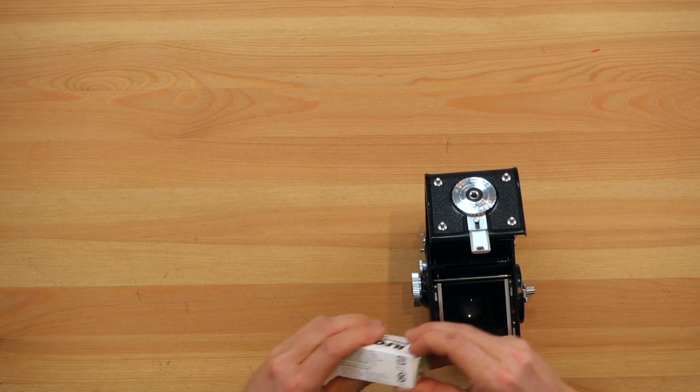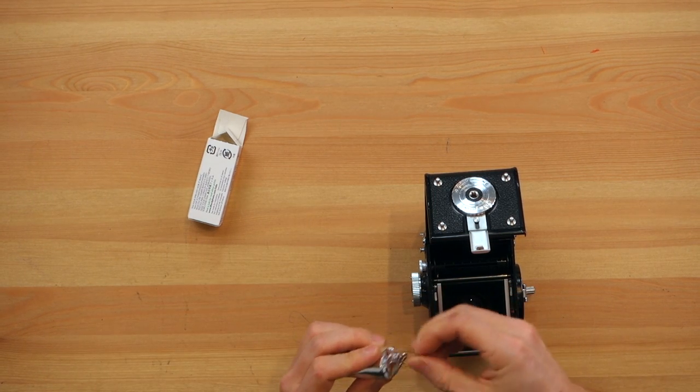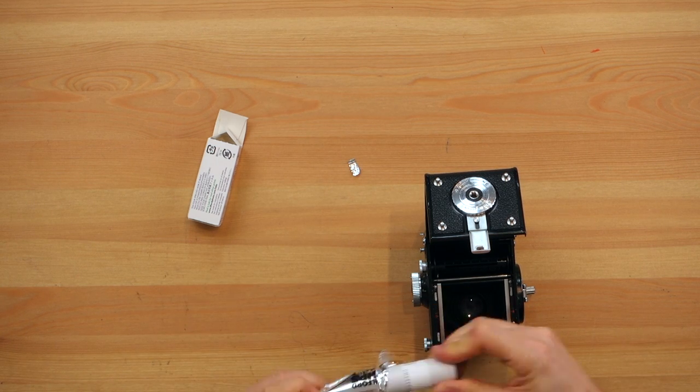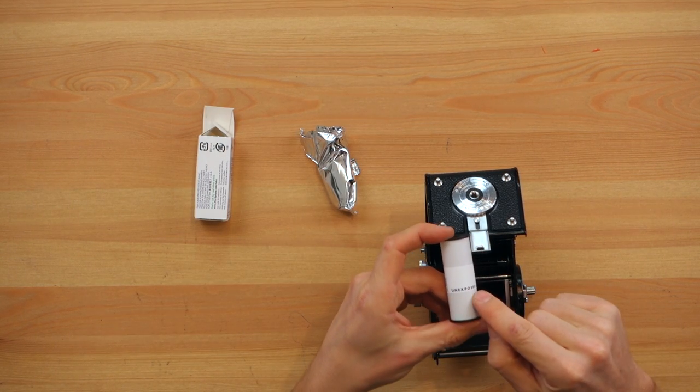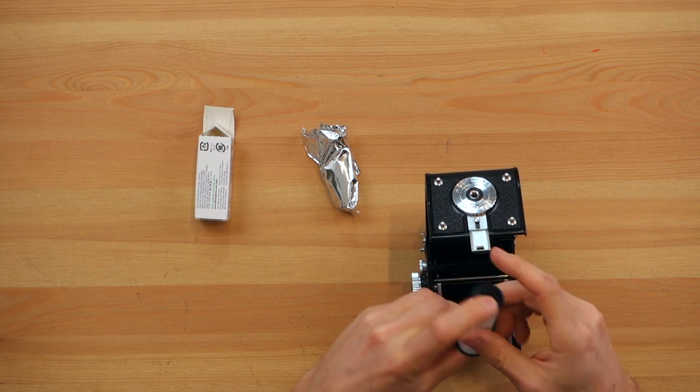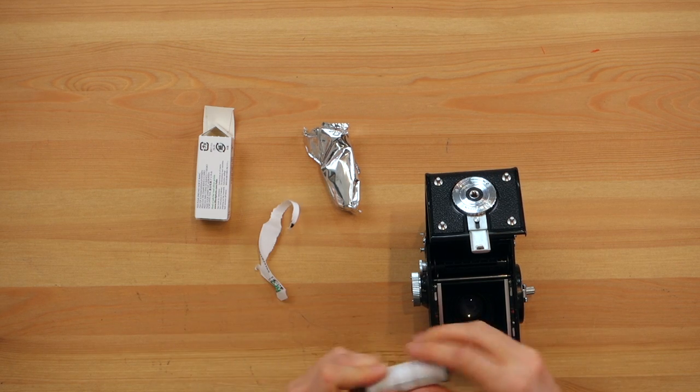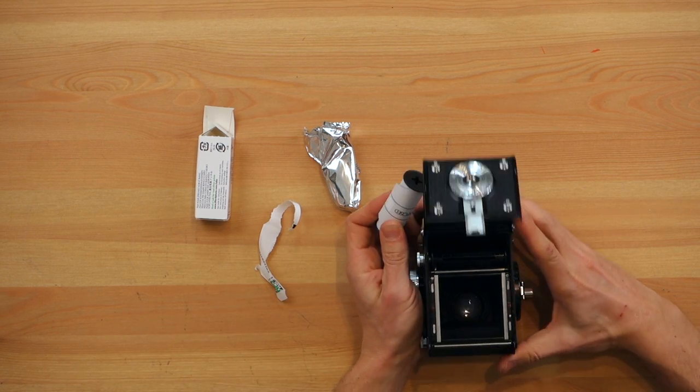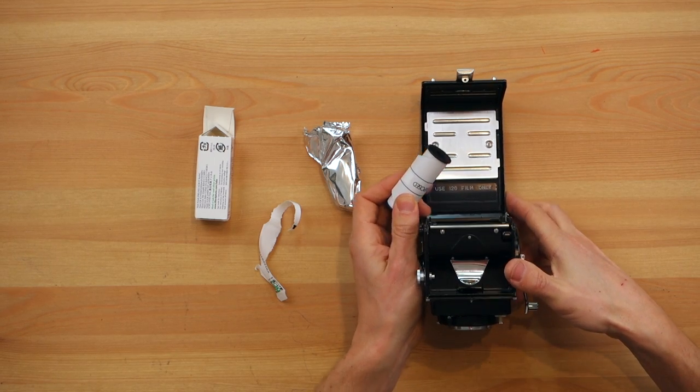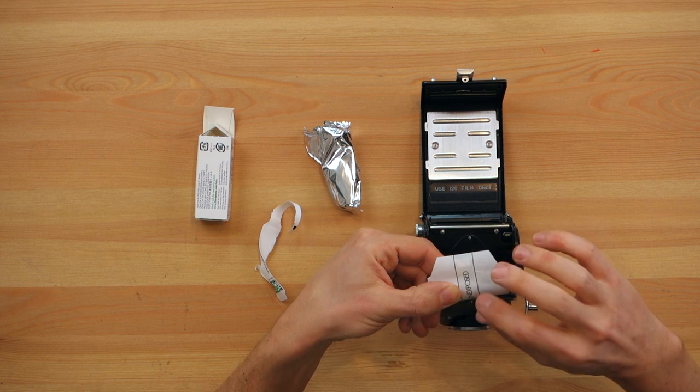So now let's open our film. Open the little box, open the wrapper. This here says unexposed, so we know that this film hasn't been shot yet. So we peel this paper off, leave no bits and pieces there so it won't get into the camera.